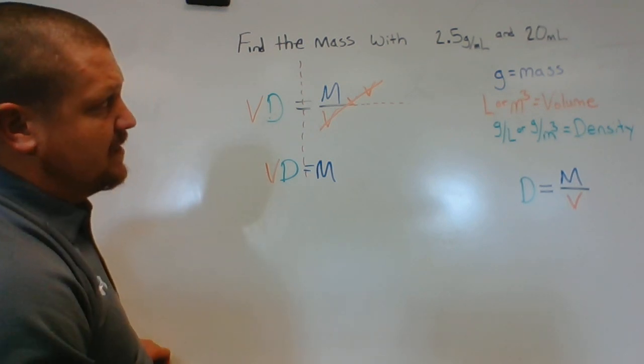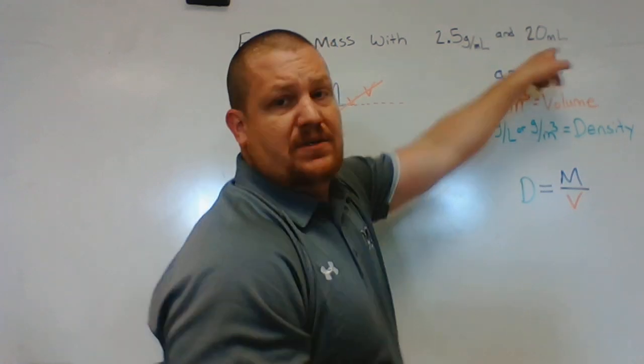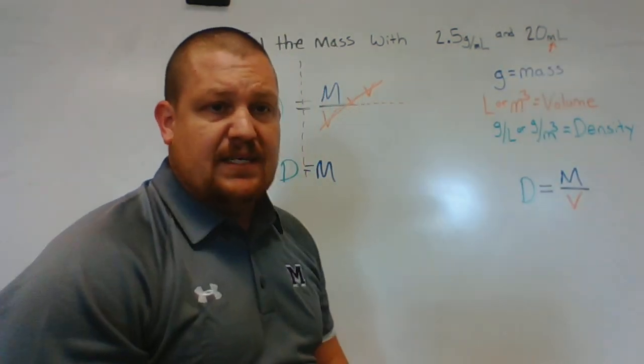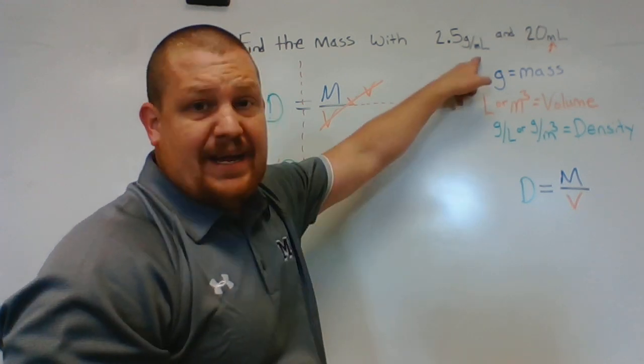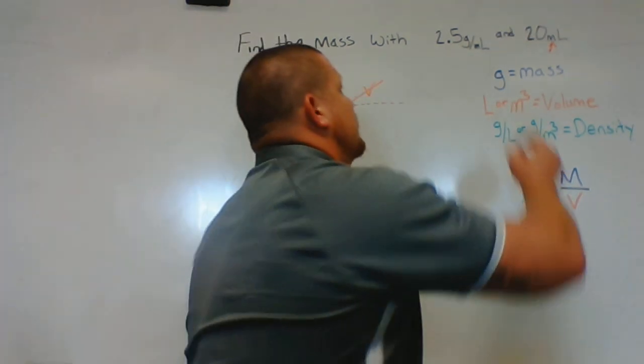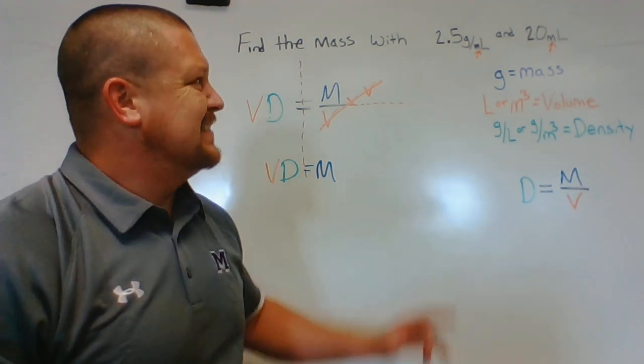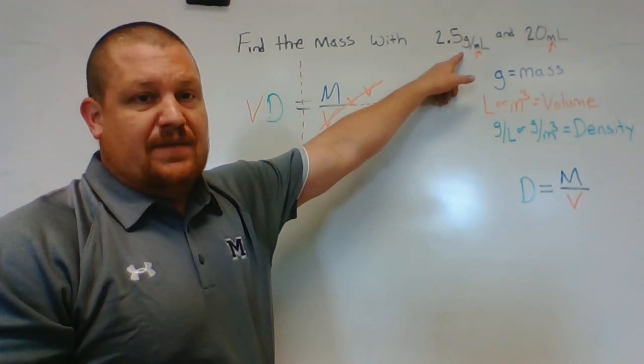Our volume unit is here, so we see milliliters. That's going to indicate to us that this is our volume. But hey, there's a milliliter right there too, right? So you're thinking maybe I plug that in for the volume. But there's another unit here—this is grams per milliliter.